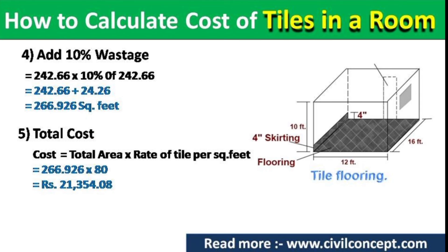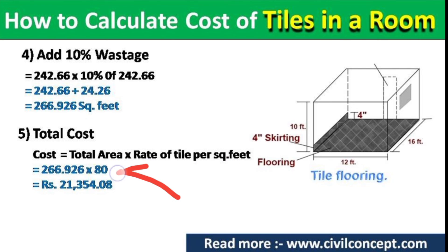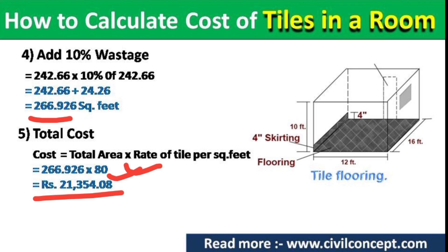Finally, the total cost equals the total area multiplied by the rate of tile per square foot. In the market, tiles are available at different costs according to quality. Assuming a rate of 80 rupees per square foot, we multiply 266.926 by 80 and get 21,354.08 rupees to tile this room.